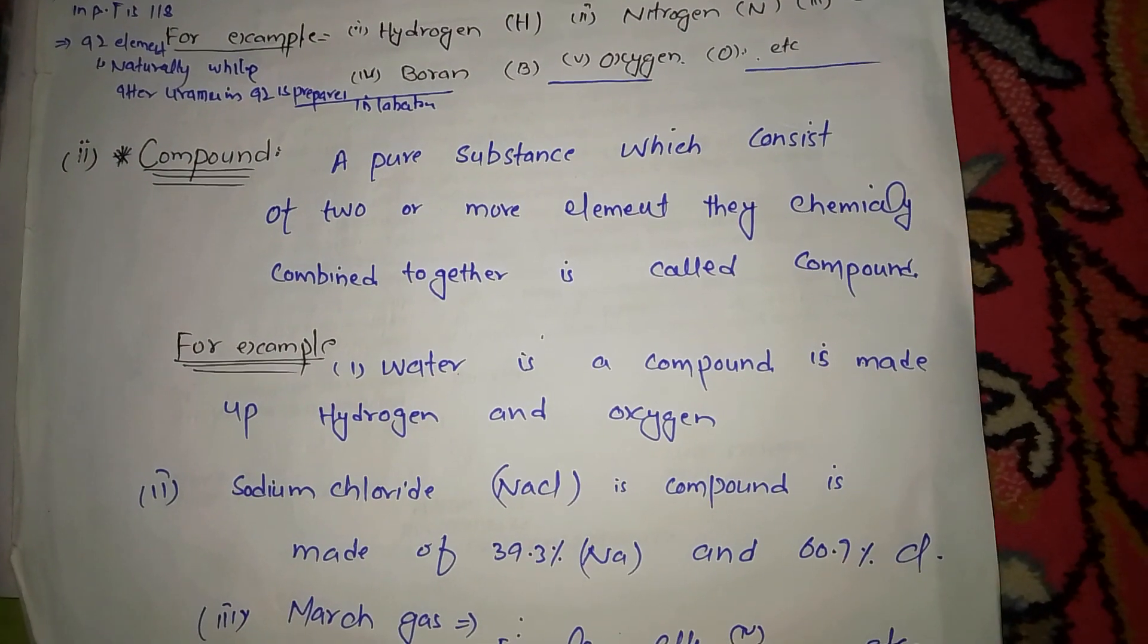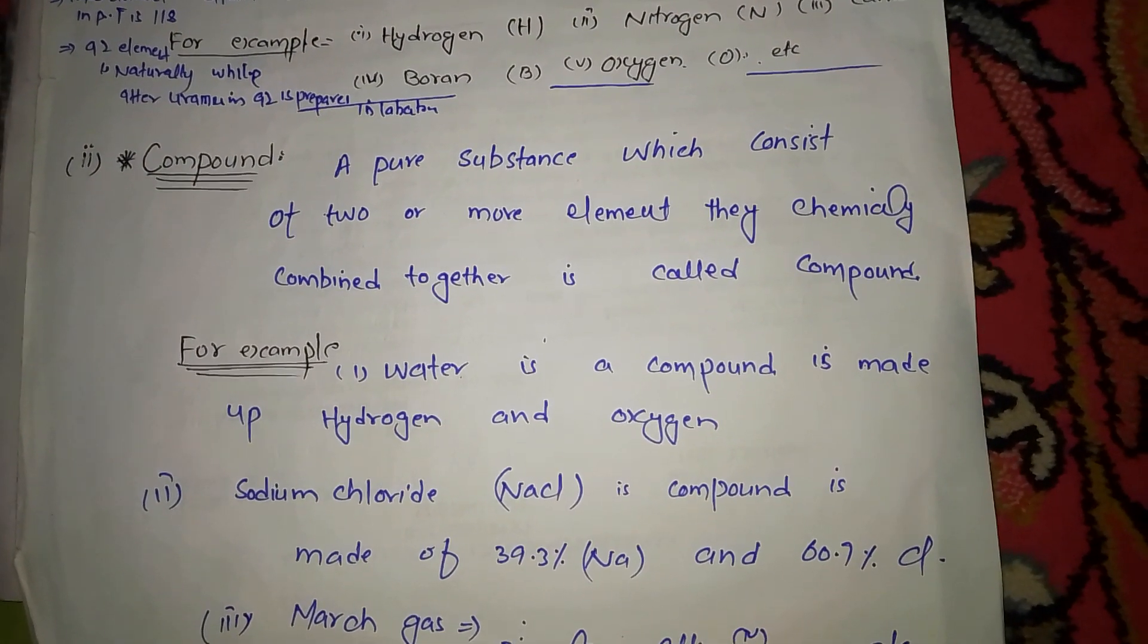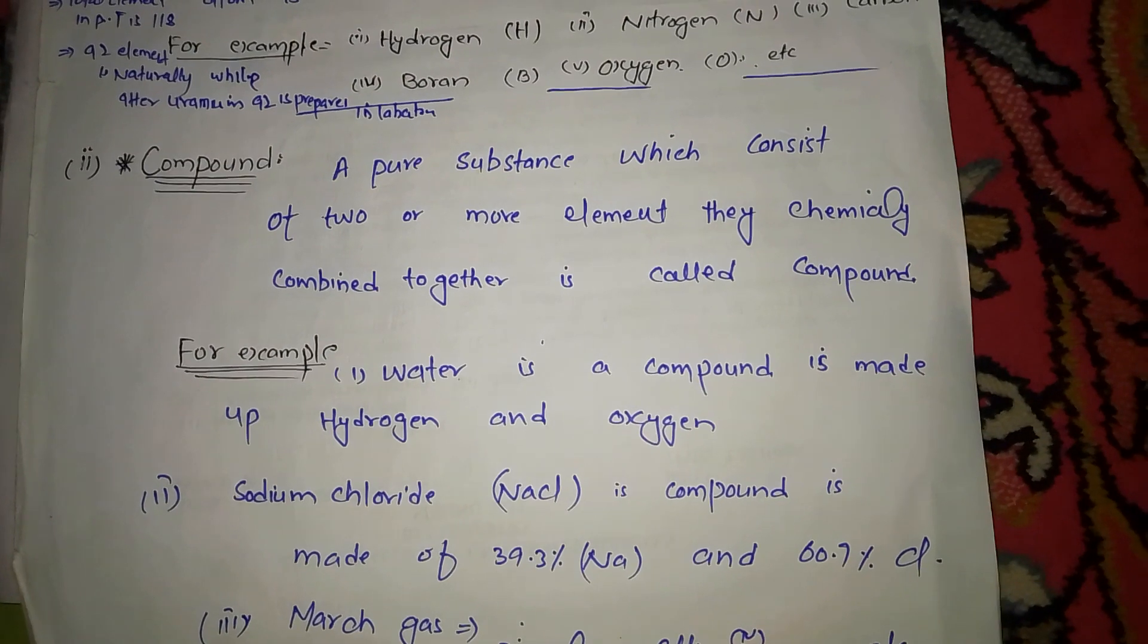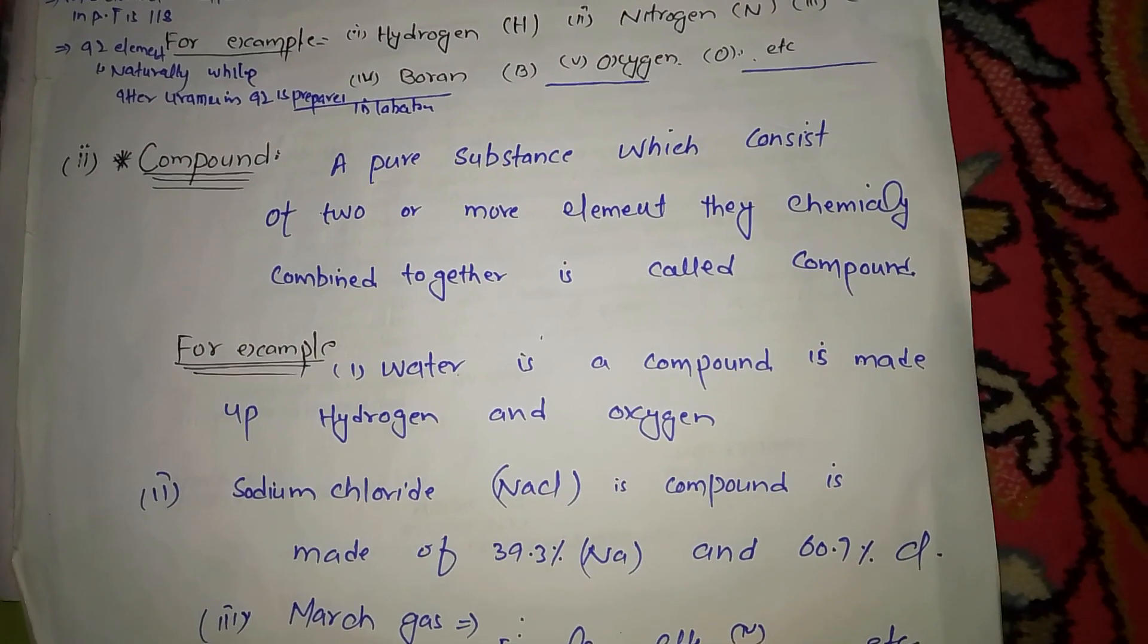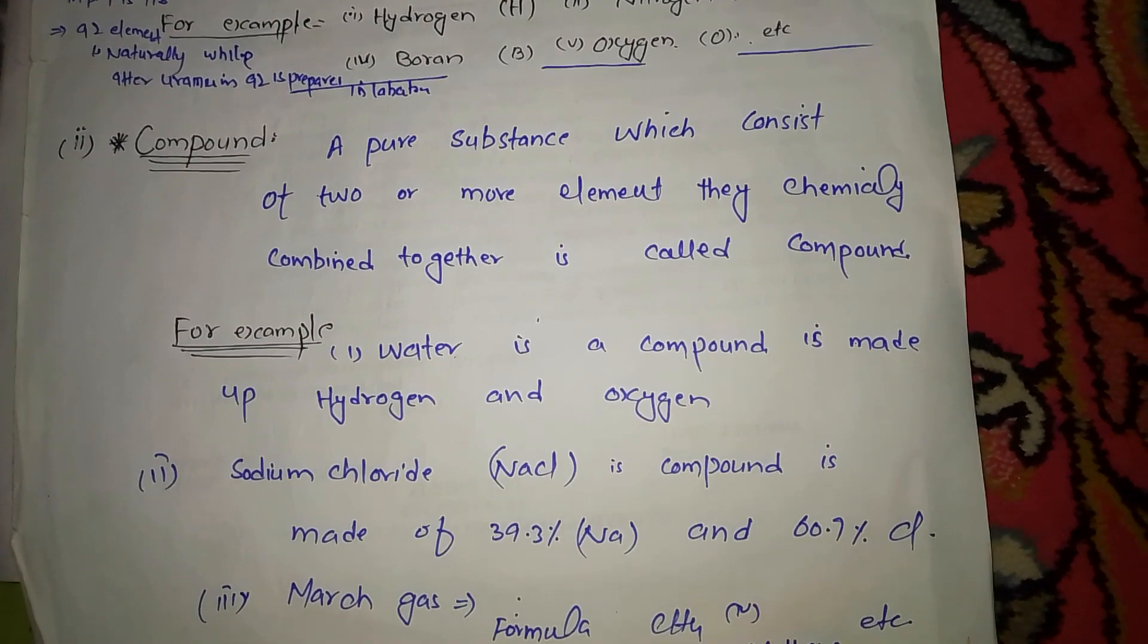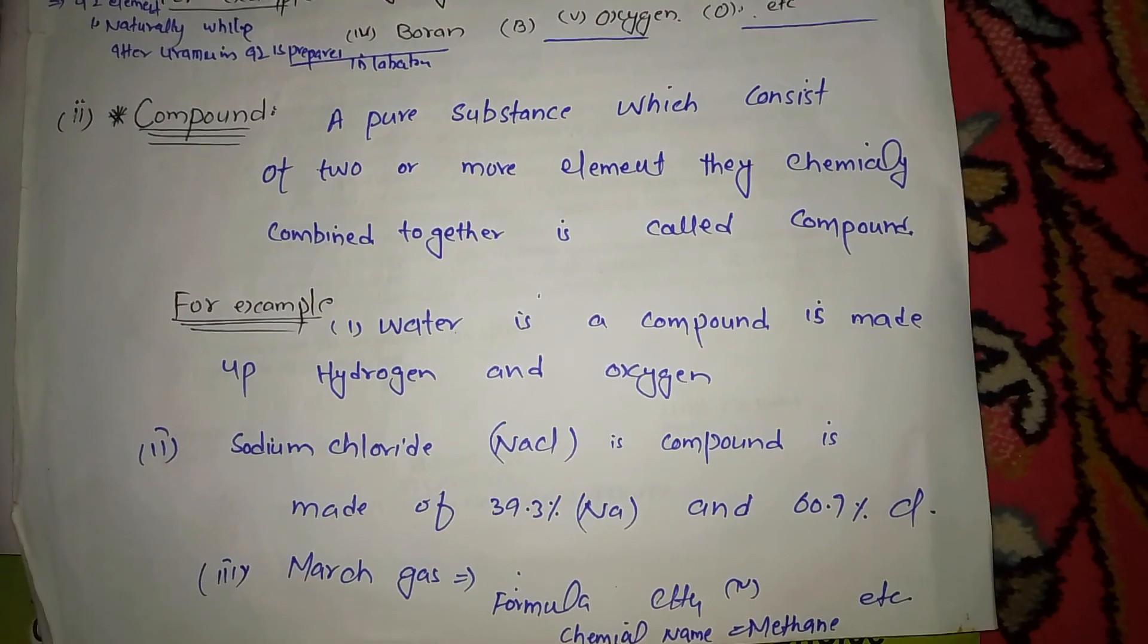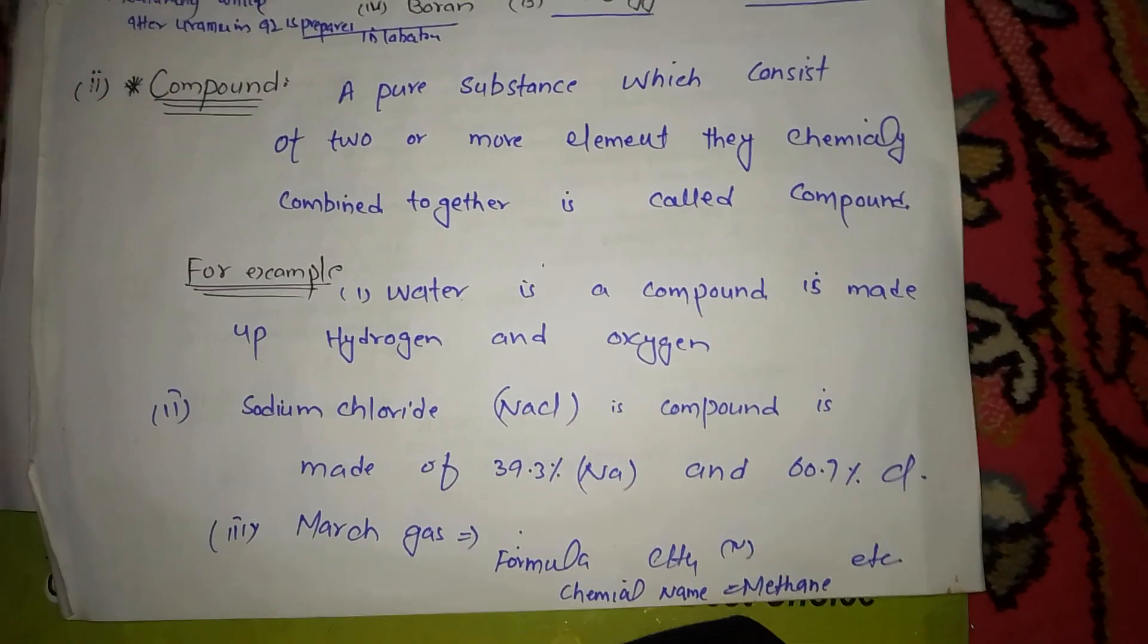Next example: sodium chloride, also called table salt NaCl, is a compound made of 39.3% sodium and